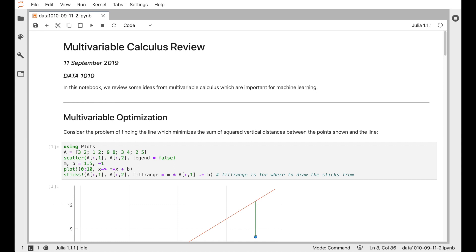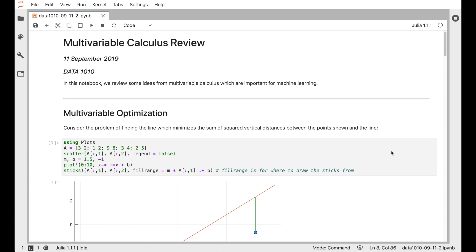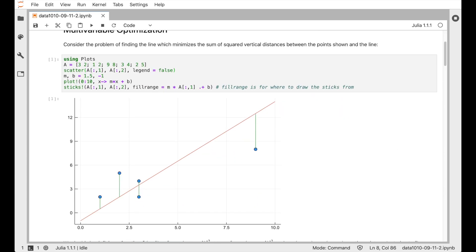Welcome. Today we'll review some multivariable calculus and try to connect some of those ideas to machine learning. So for a simple machine learning example, imagine that you have some points which are stored in a matrix A, and you want to come up with a line that approximates the set of points as well as possible in the sense that the sum of the squared vertical distances from the line to the points is as small as possible.